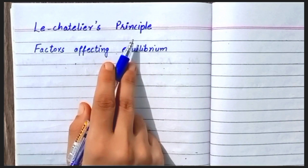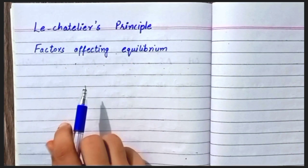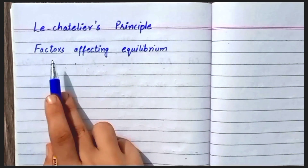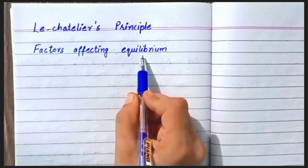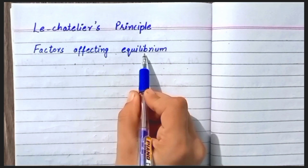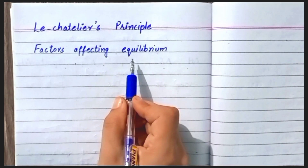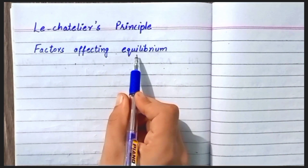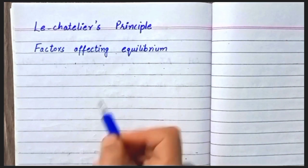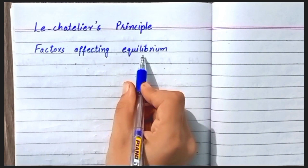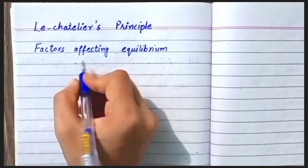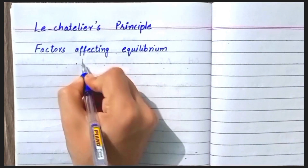Le Chatelier's Principle explains the factors affecting equilibrium. In any chemical reaction, when equilibrium is achieved, if we change the equilibrium conditions, it will shift the equilibrium in order to minimize the effect of the change.